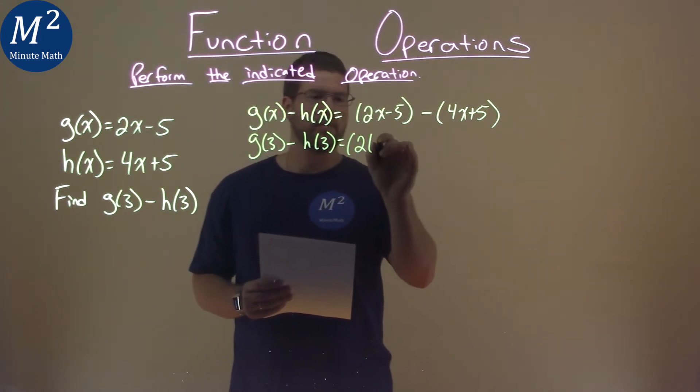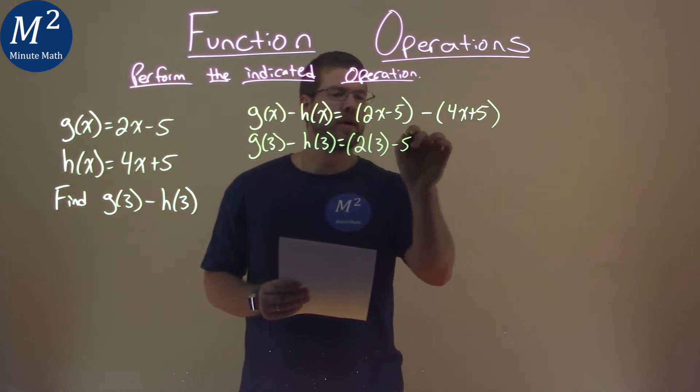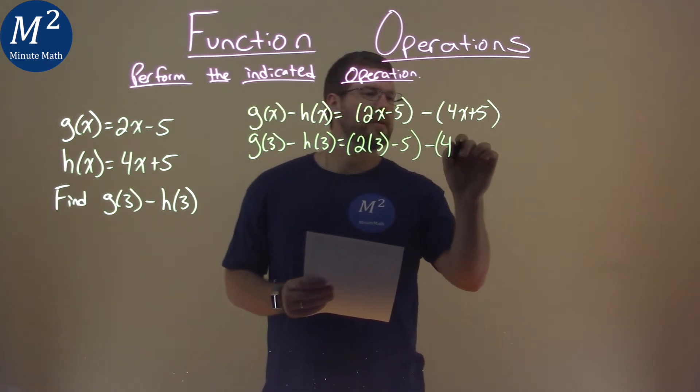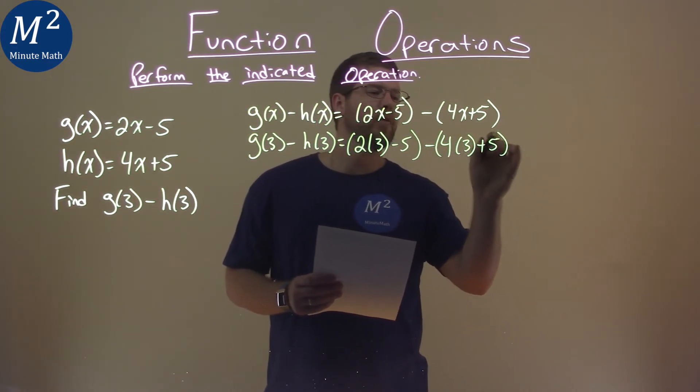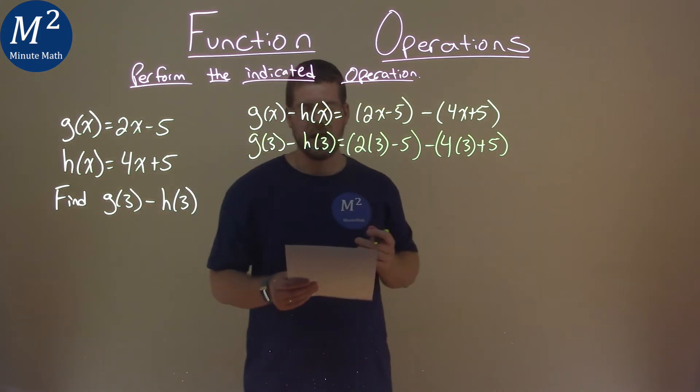So to do that, we have 2 times 3 in parentheses, minus 5, minus 4 times 3 again, plus 5. We're just substituting 3 for our x.